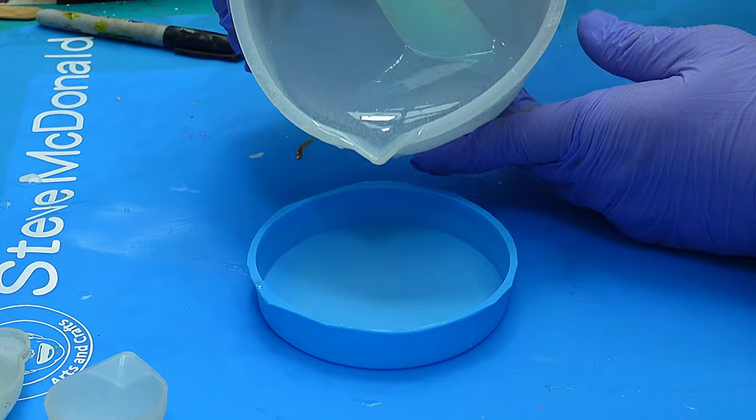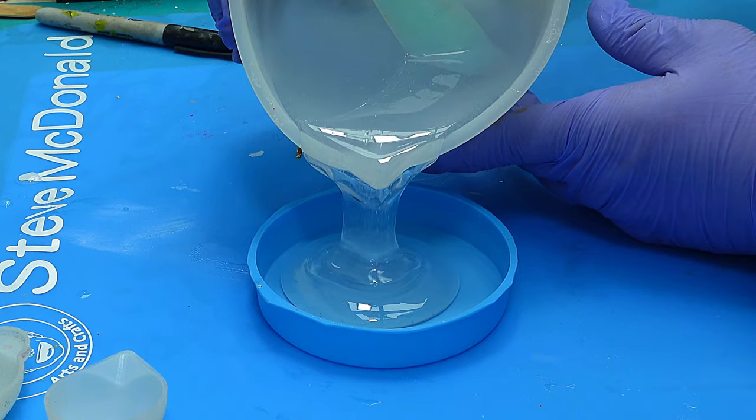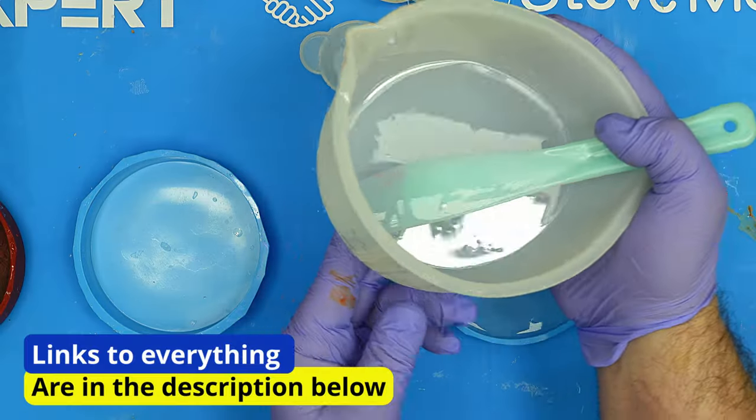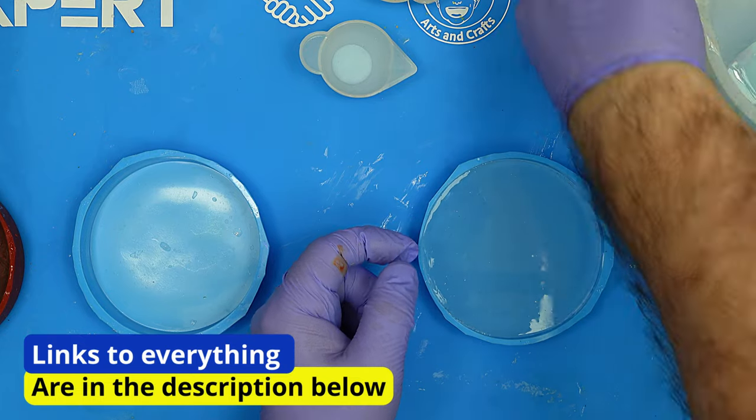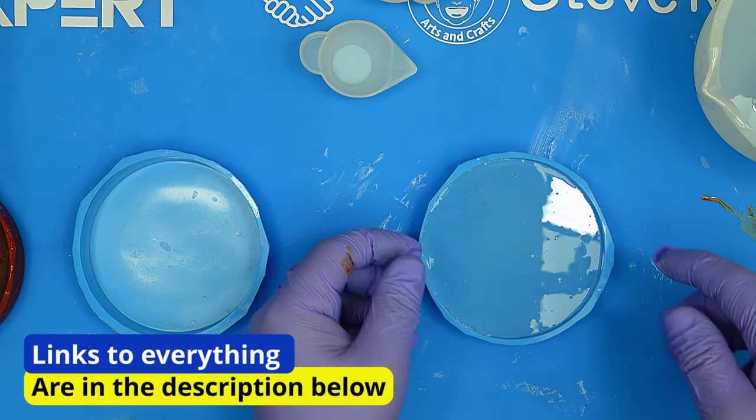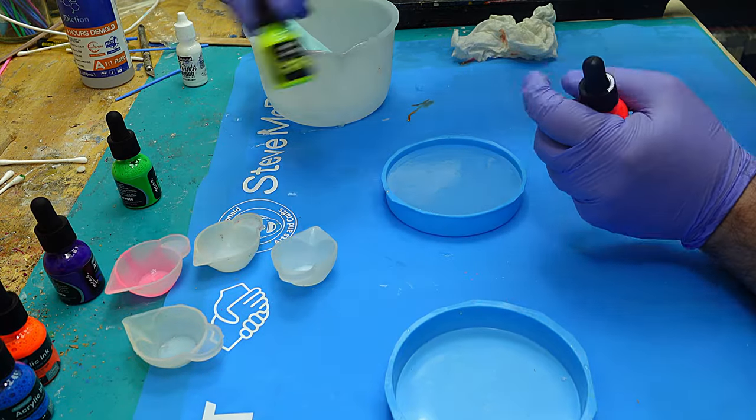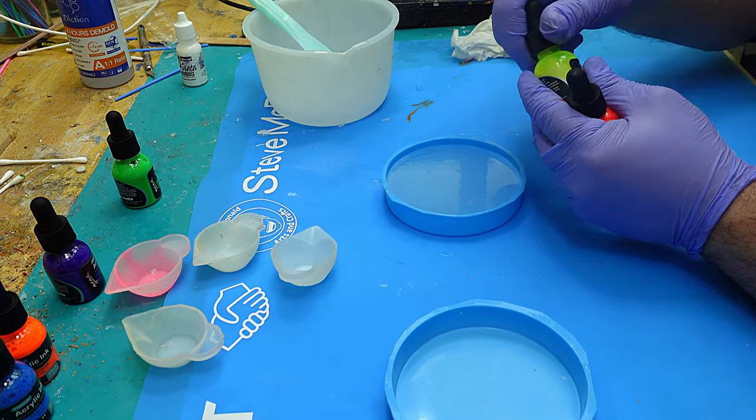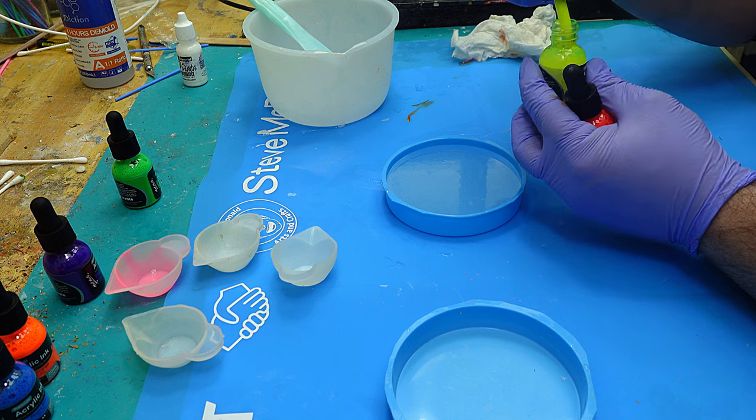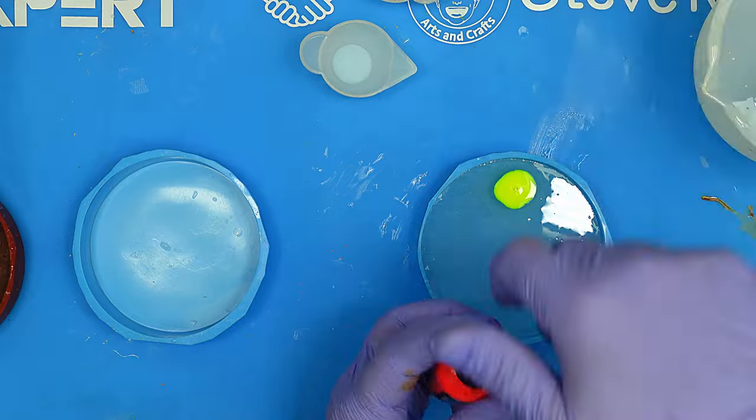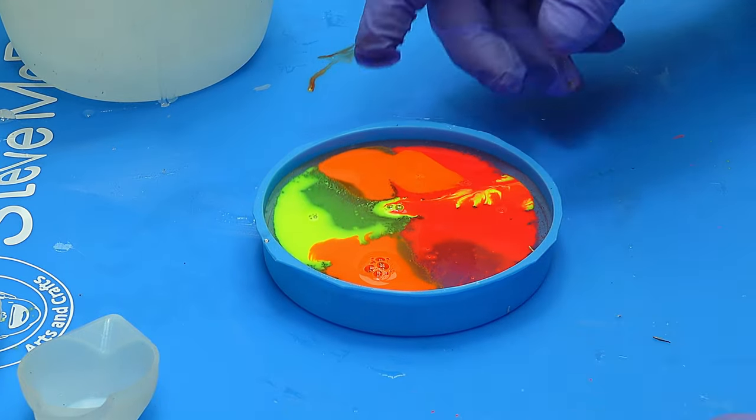I'll put that to one side. The next one I'm doing, I'm putting some resin in first. If you want to know where I got this lovely big jug from, it's in my resin starter kit linked below. For this one I'm going to use oranges, reds, and yellows. I'll pour this on top, leave it, and see what happens.